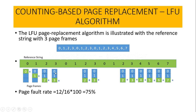Similarly, page 1 is also available in the page frame, so there will not be any page fault. Coming to the next request for page 2, we apply the page replacement algorithm. Page 3 is having the least count, so we are going to replace page 3 with page 2. Then the next request will once again replace page 2 with page 3, since page 2 is having the least count.